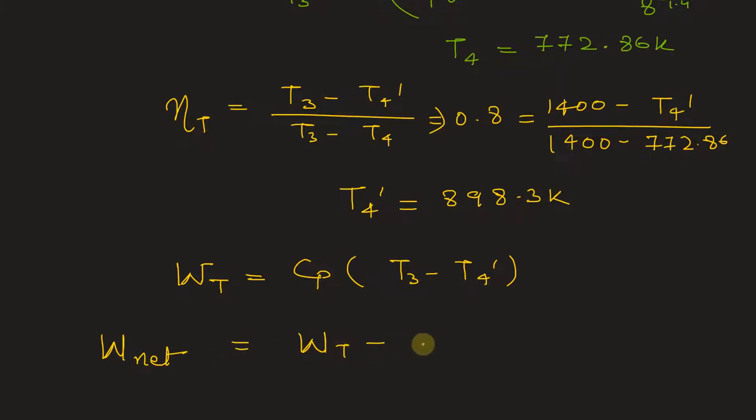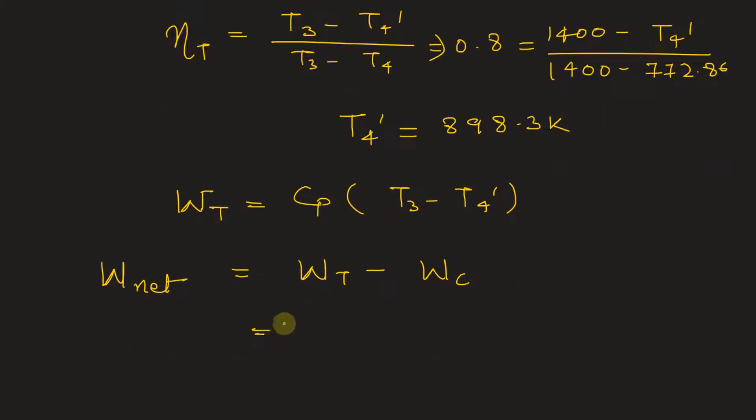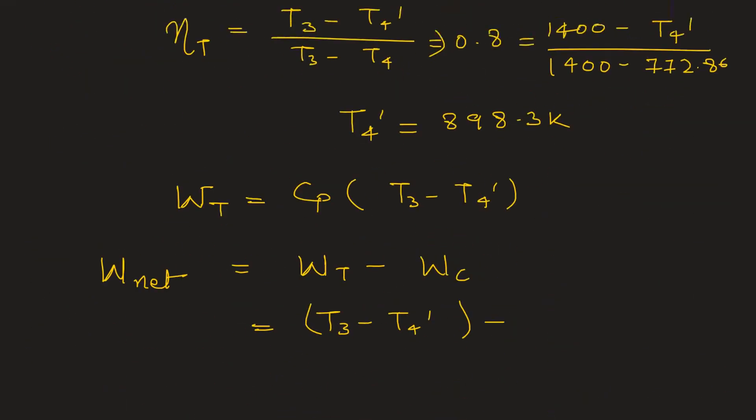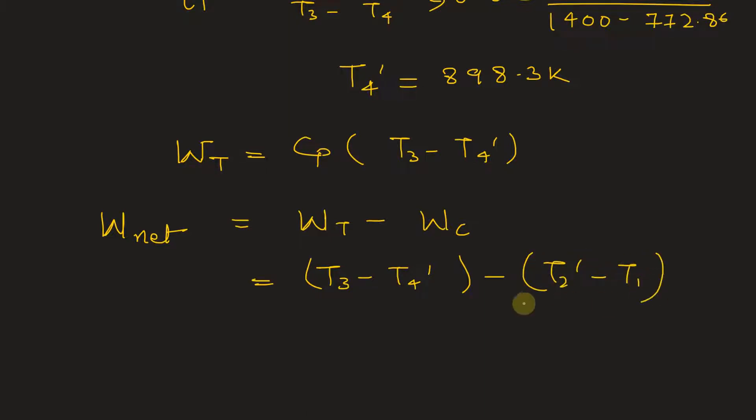Network done will be the turbine work minus the compressor work. Compressor work we have already calculated. So Cp anyway is one. So this will be T3 minus T4 dash minus for compressor, this will be T2 dash minus T1. All the values we have already obtained. So T3 is 1400 minus T4 dash. Here we have Cp of course, but the value of Cp is 1, so we are not writing it here. So this is T4 dash we have got is 898.3 minus T2 dash that is 604.3 minus 300. So the network done will be equal to 197.4 kilowatt.